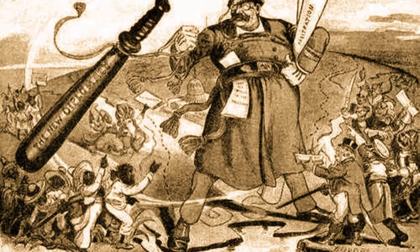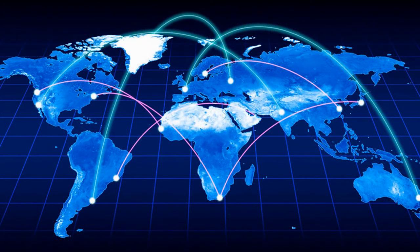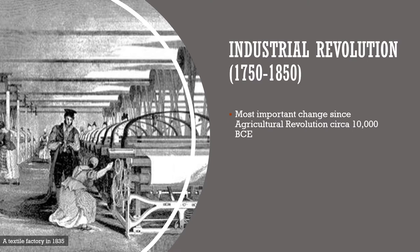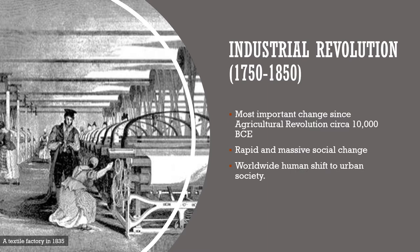All of this, however, has led to ultimately the interconnected world that we live in today — all a result of the Industrial Revolution. The Industrial Revolution, being the most important change since the Agricultural Revolution 10,000 years earlier, had seen us move from hunter-gatherer lifestyles to settled societies. While it changed industry and how we make things, it also brought about rapid and massive social change, beginning the worldwide human shift to an urban society, and allowing for a population explosion and an overall rise in standard of living.